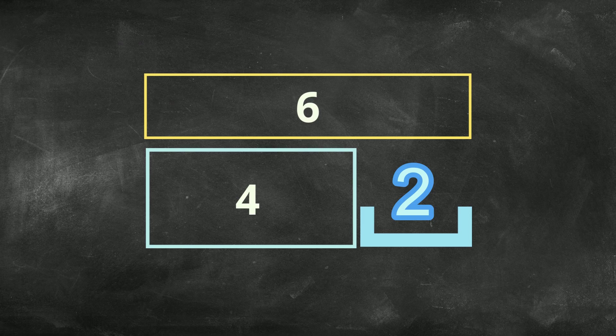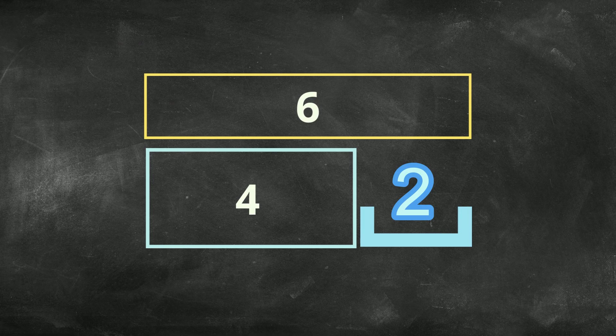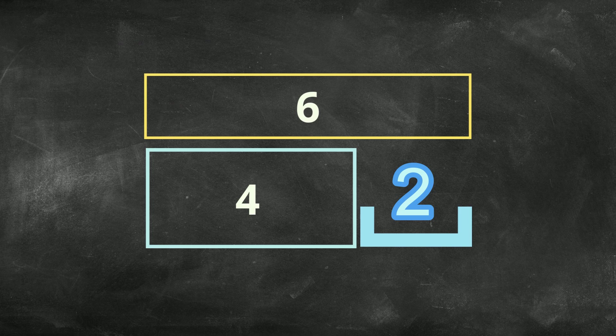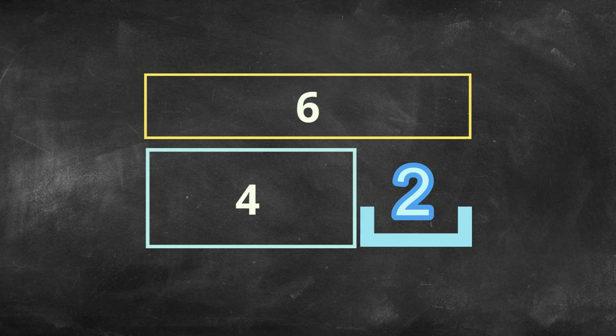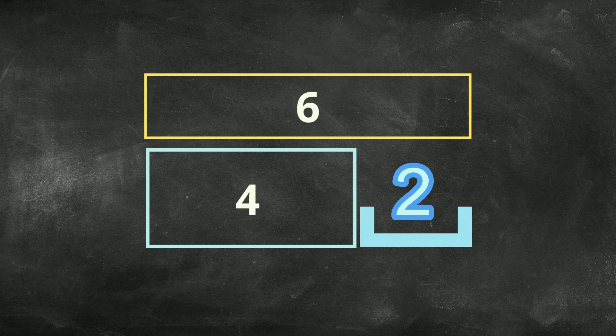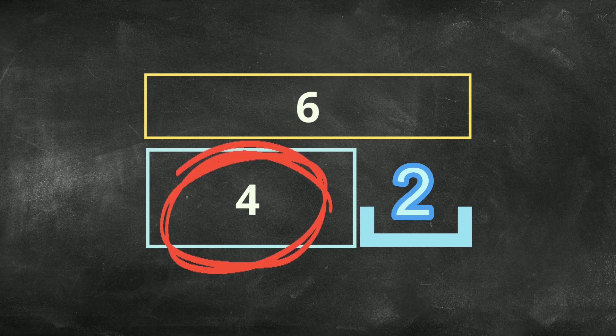Remember that with subtraction, it's very important which number you put first. Subtraction is not like addition. Subtraction is not commutative. So you cannot put the 4 before the 6. The 6 has to go first. The number that's bigger has to be the one on top or the one ahead, the one before. So 6 is first minus 4 because I'm taking away 4 from 6. I cannot take away 6 from 4.